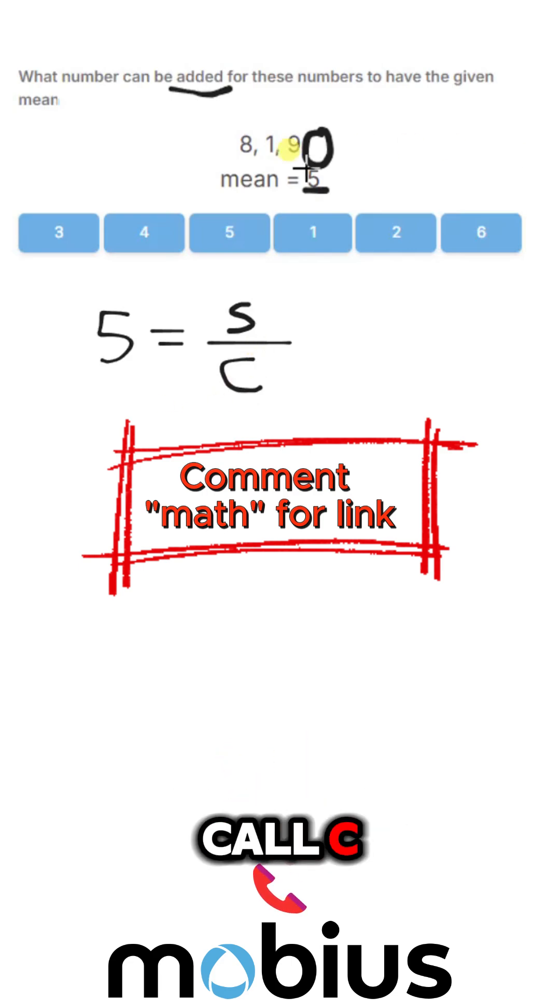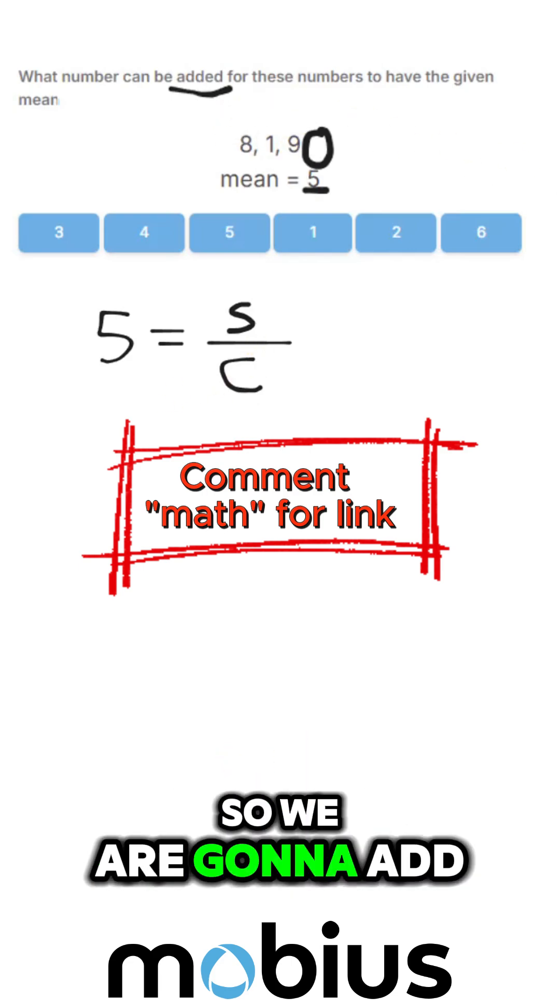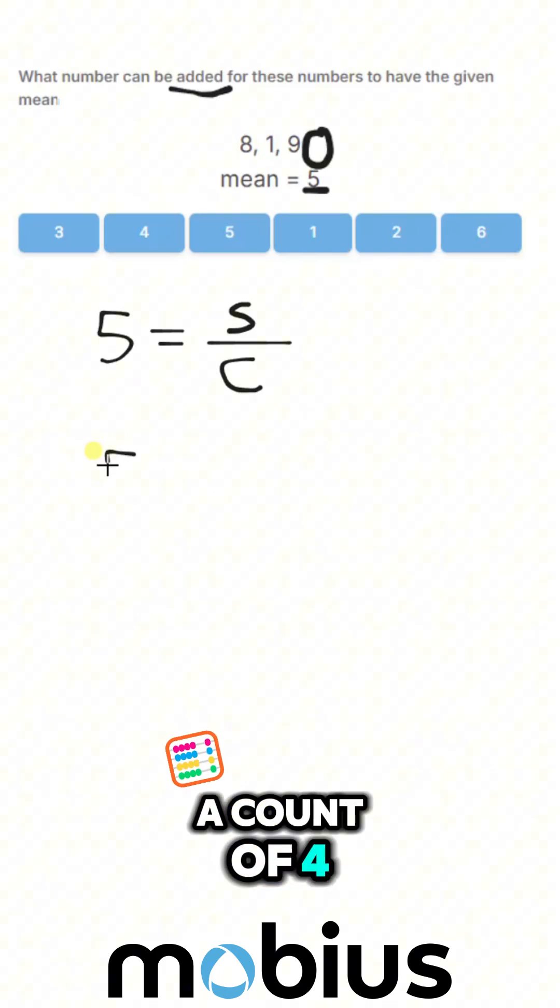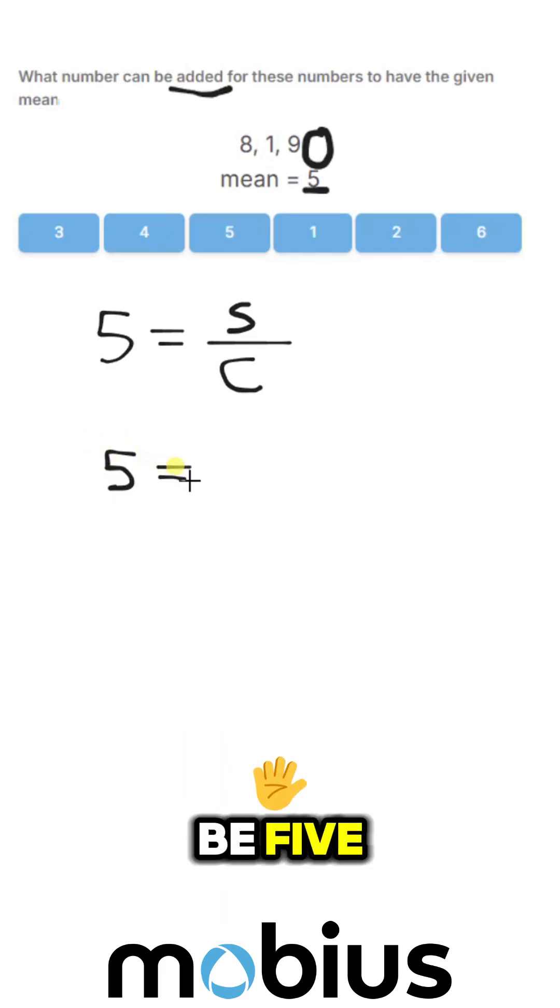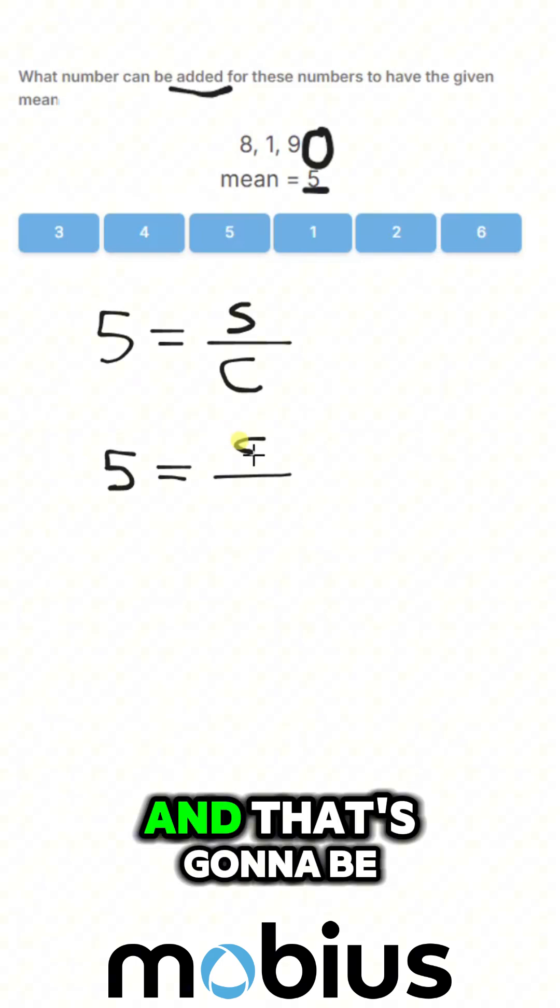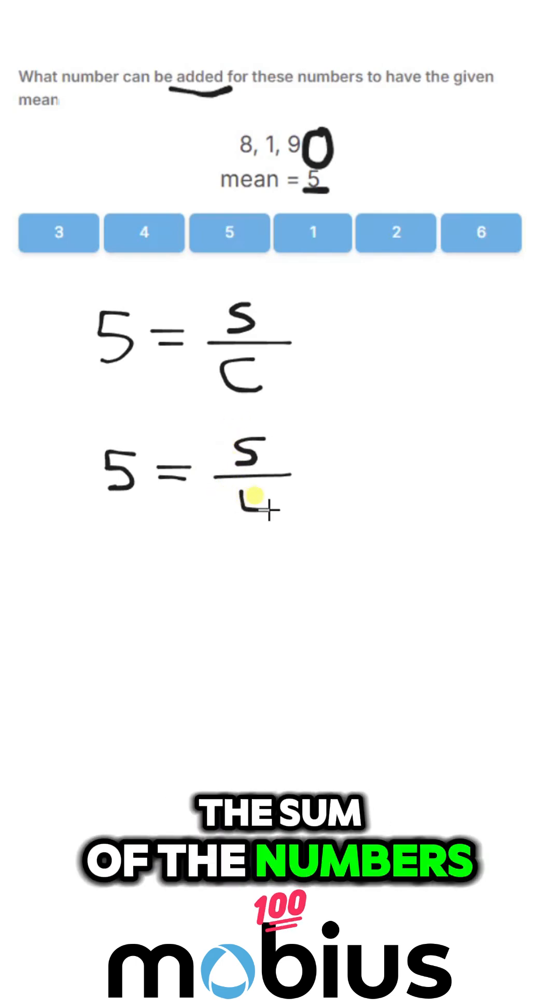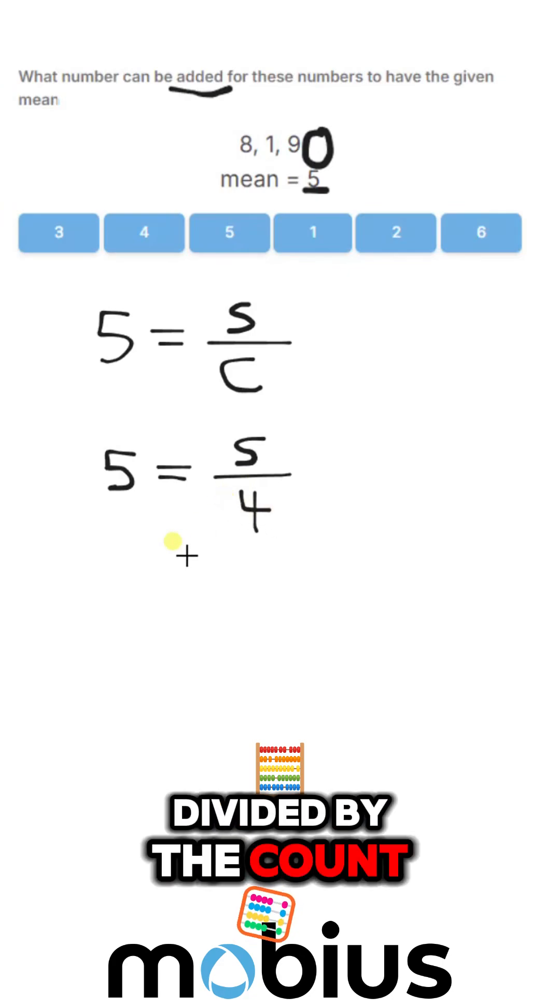So we are going to add a number, so we're going to have a count of 4. So our mean is going to be 5, and that's going to be the sum of the numbers divided by the count of 4.